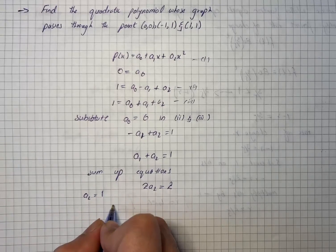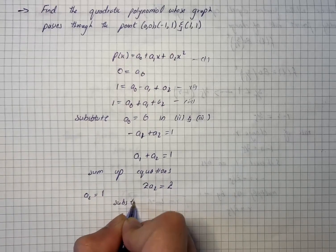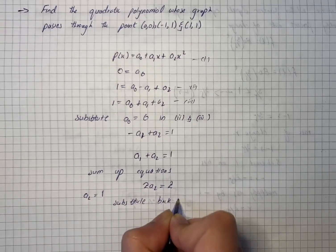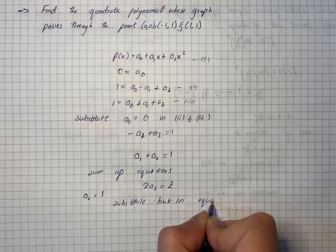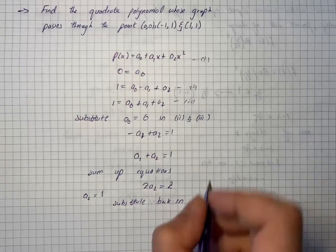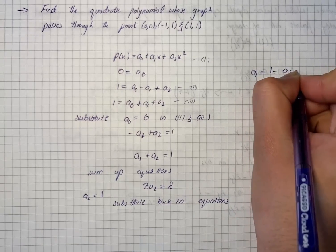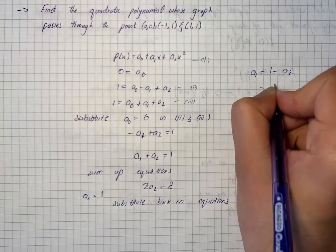This implies that a2 is equal to 1. Now we will substitute back in equations, so we will have a1 is equal to 1 minus a2.